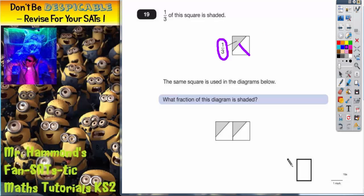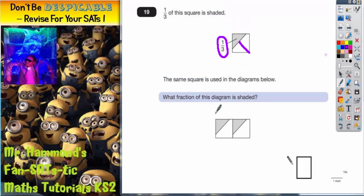If we look at the first part of the question, it says what fraction of this diagram is shaded. Well, if we split these diagrams in the same way as the top one, we've got one, two, three, four, five, six sections. And out of those six sections, one, two sections are shaded.